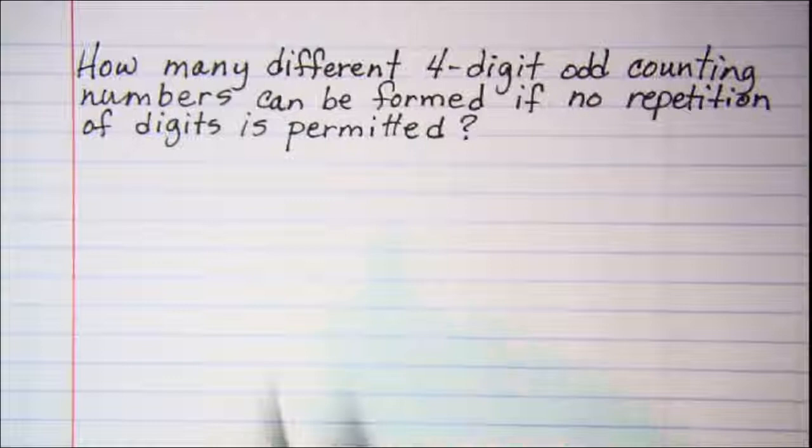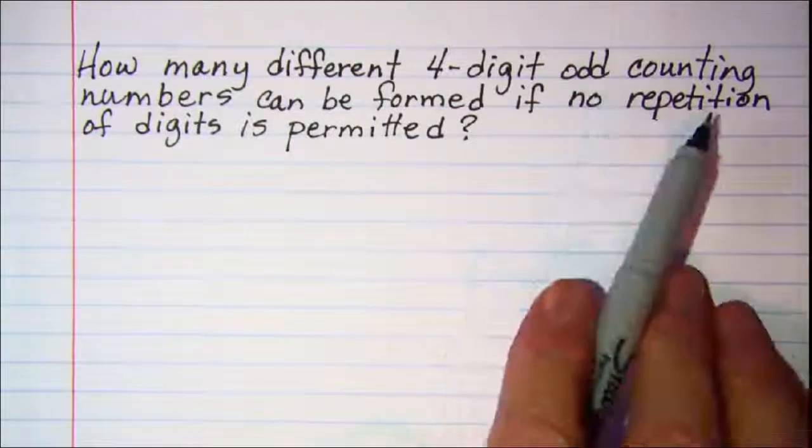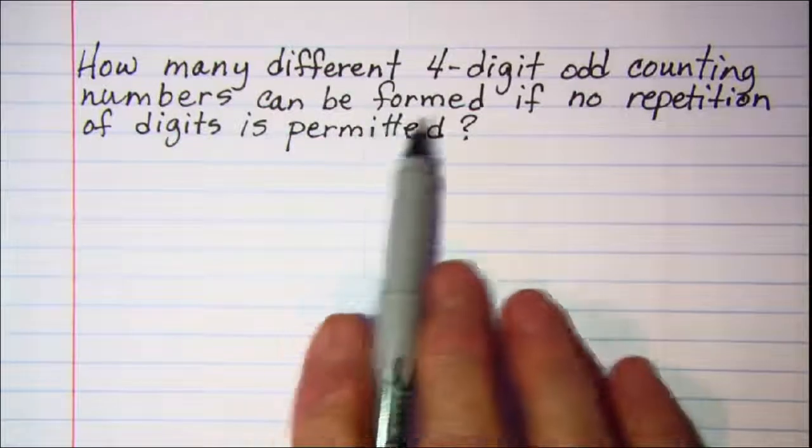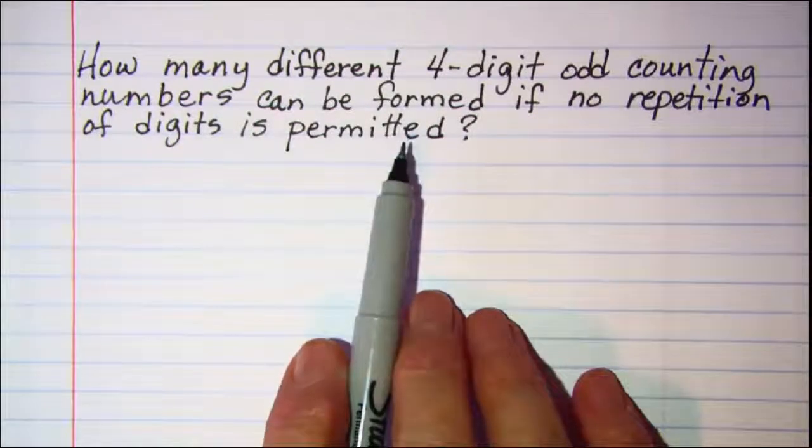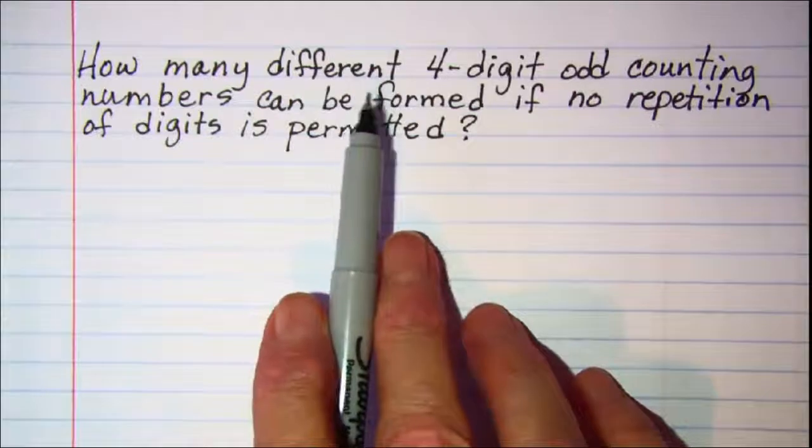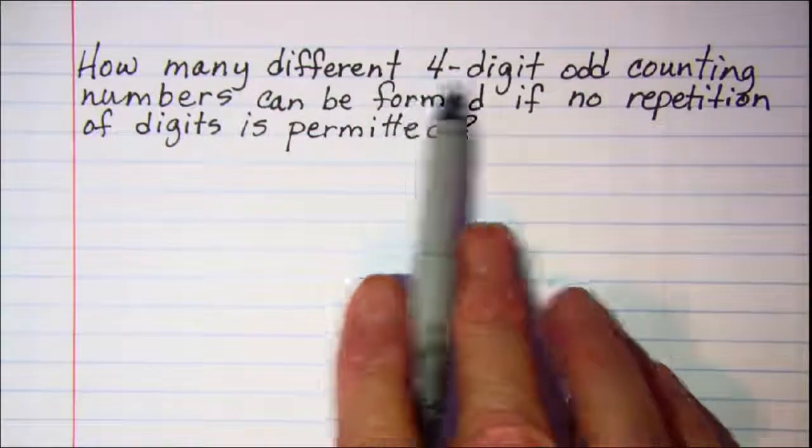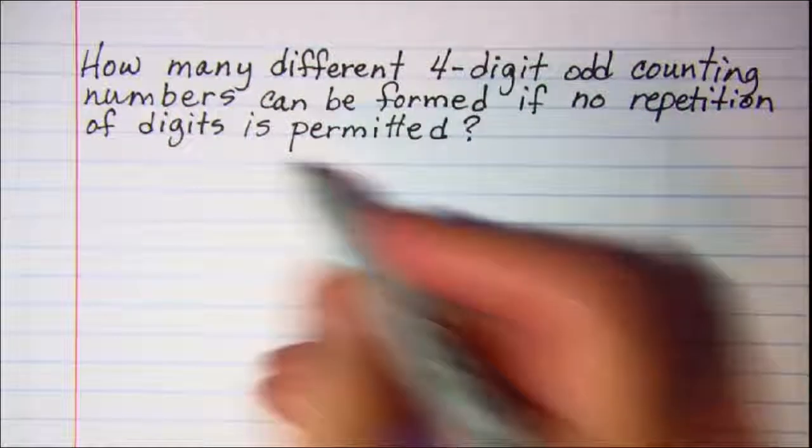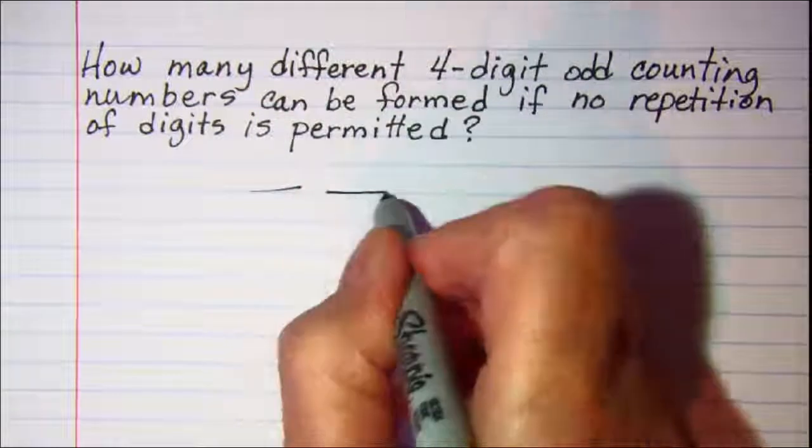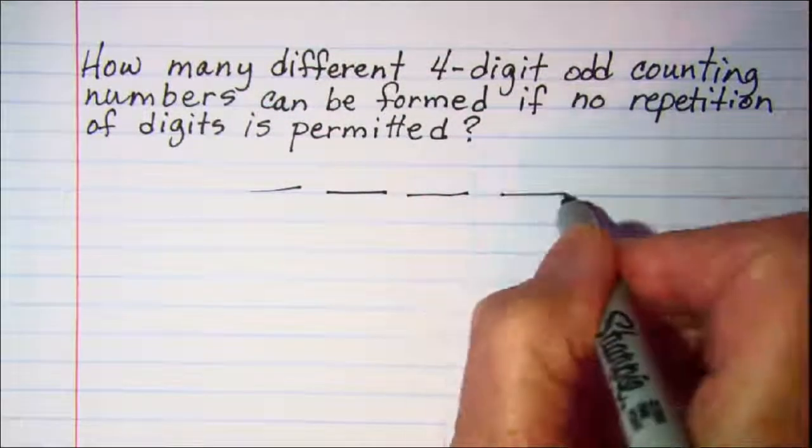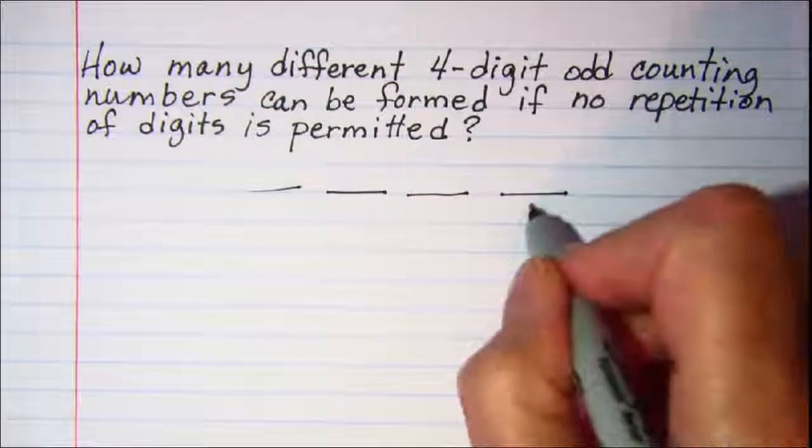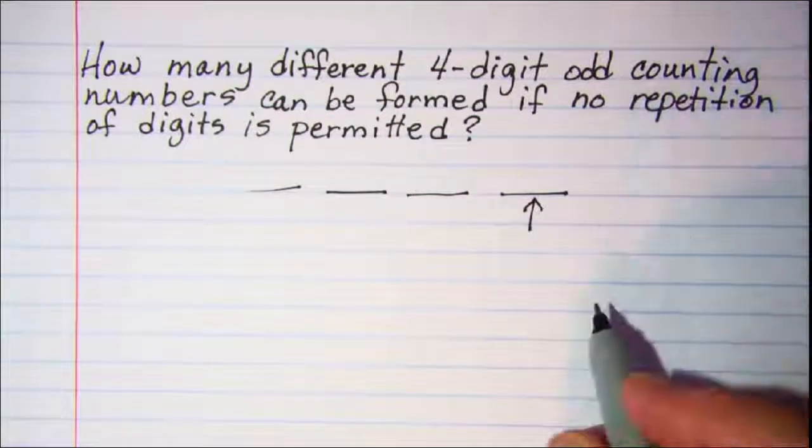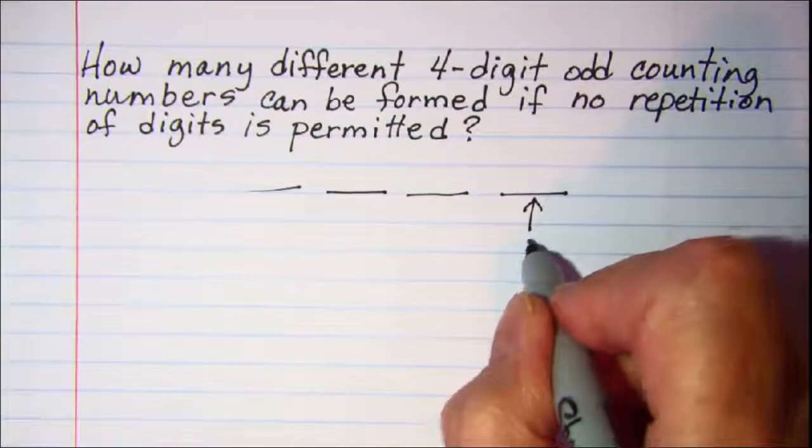Our next problem. How many different four-digit odd counting numbers can be formed if no repetition of digits is permitted? So in this one we have the restriction that there are four-digit numbers. So I can just put my four spots. And in order for it to be an odd number the digit in the units place has to be an odd digit.